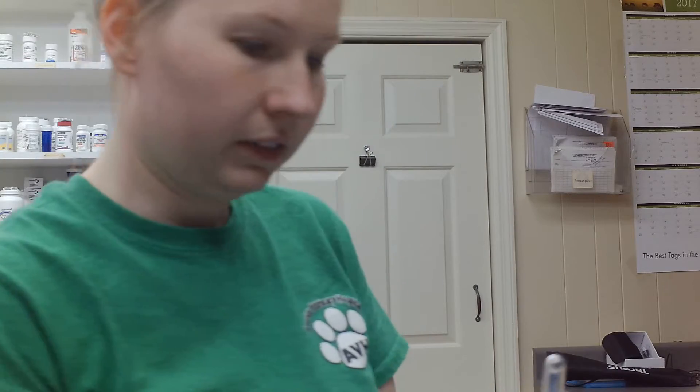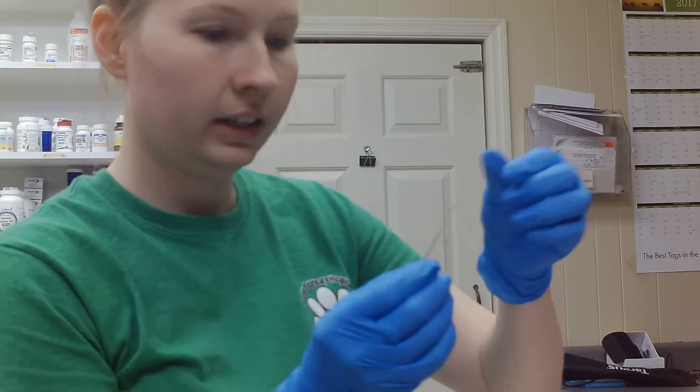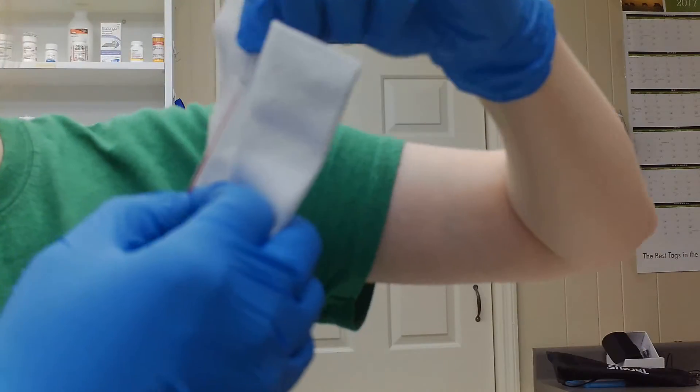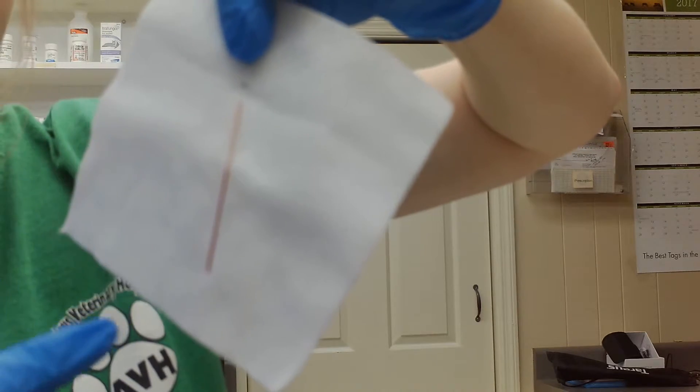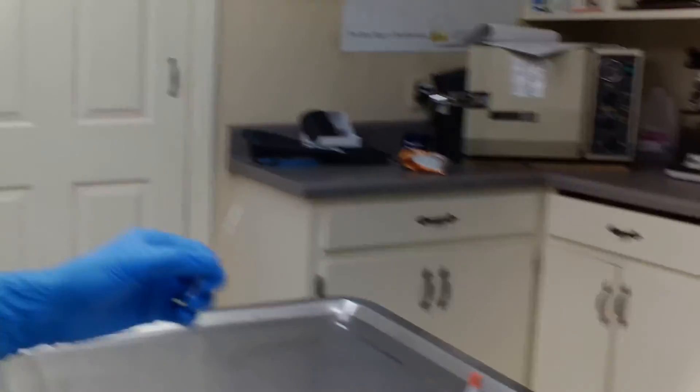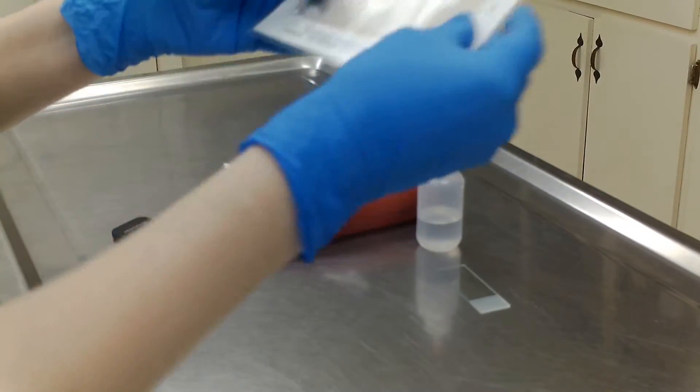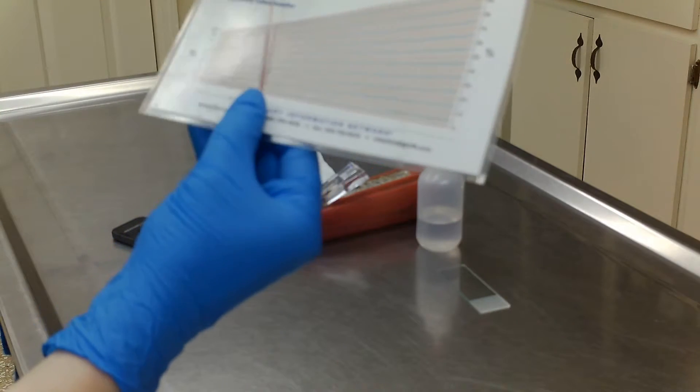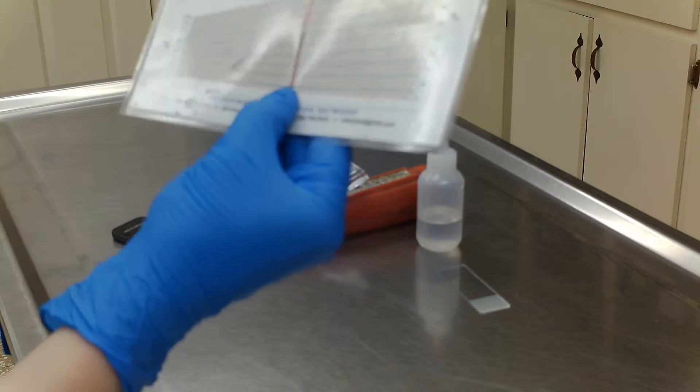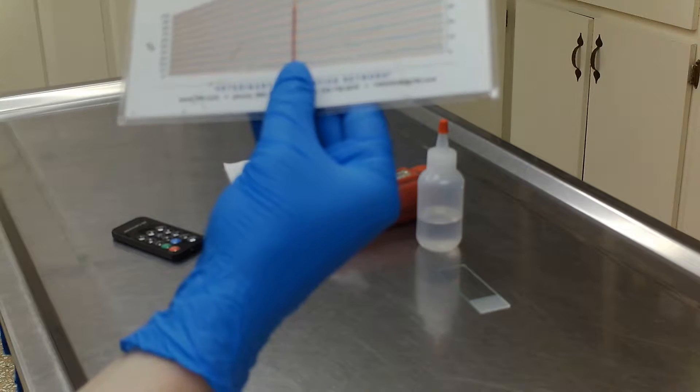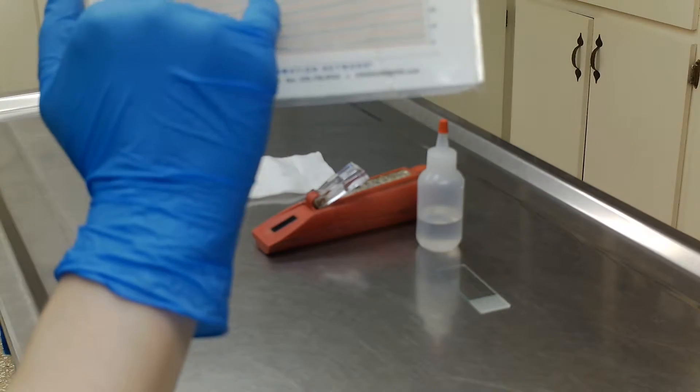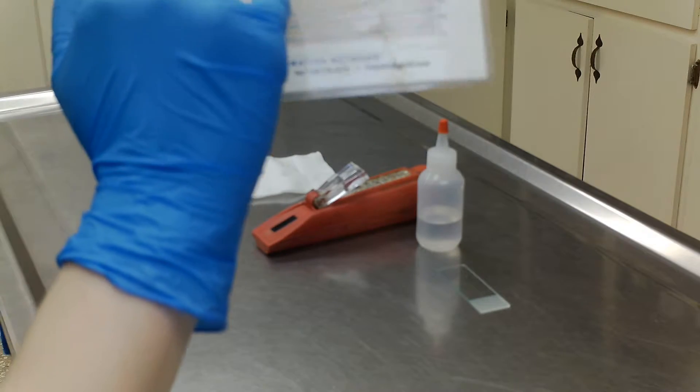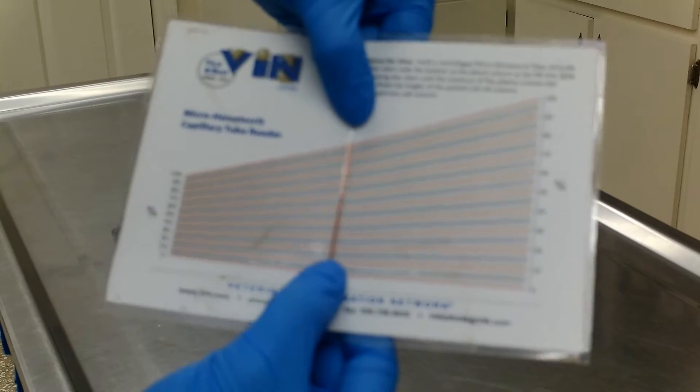I have to get it out of there. So we can actually see where the serum is here, a little buffy coat, and then all the packed cells at the bottom. So what we do, we're going to measure from the top of the clay at the bottom to the top of the serum. And I've measured about 64 percent, which is really good actually.